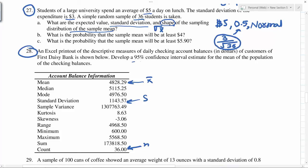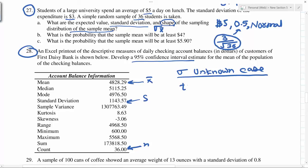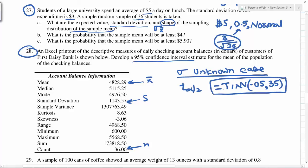For the 95% confidence interval, because this is a sigma-unknown case, we first need to find T alpha by 2. This is given by T at 0.05 — which is alpha — and n minus 1 is 35 degrees of freedom. Using the formula, this gives a t-value of 2.03.